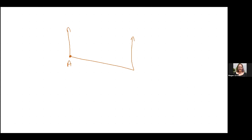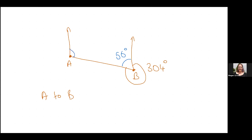Another example: I'm given 304 degrees as the external angle, and I want the bearing of A to B. From 304, this portion is 56 degrees. Since co-interior angles add to 180, I do 180 minus 56, giving a bearing of 124 degrees.